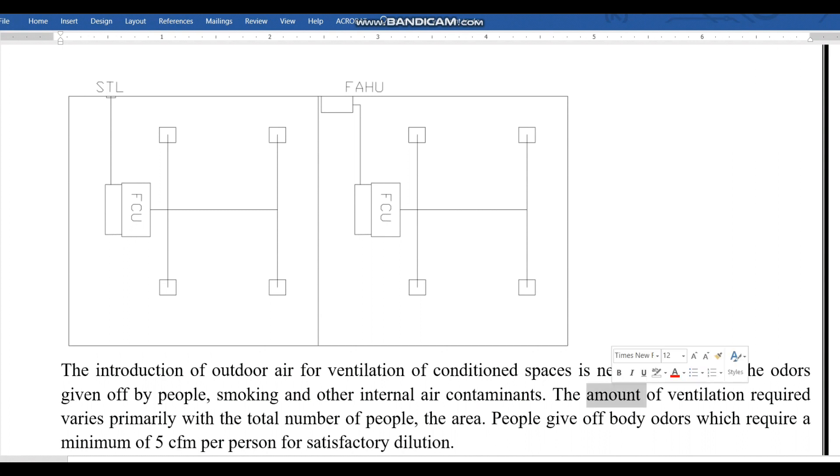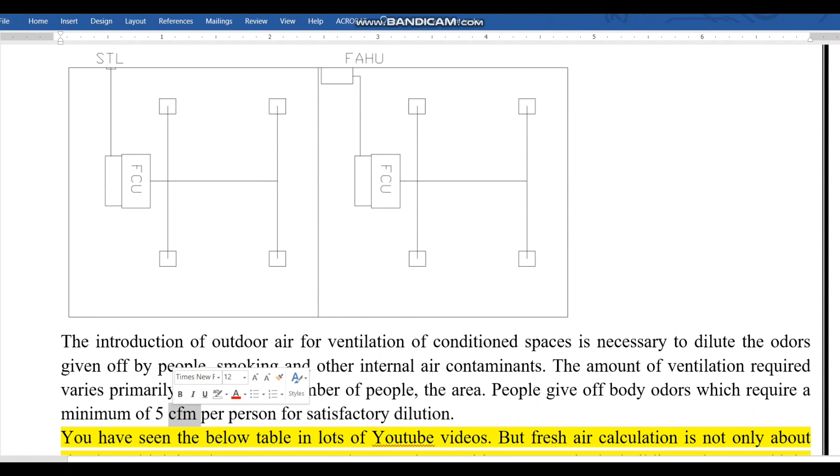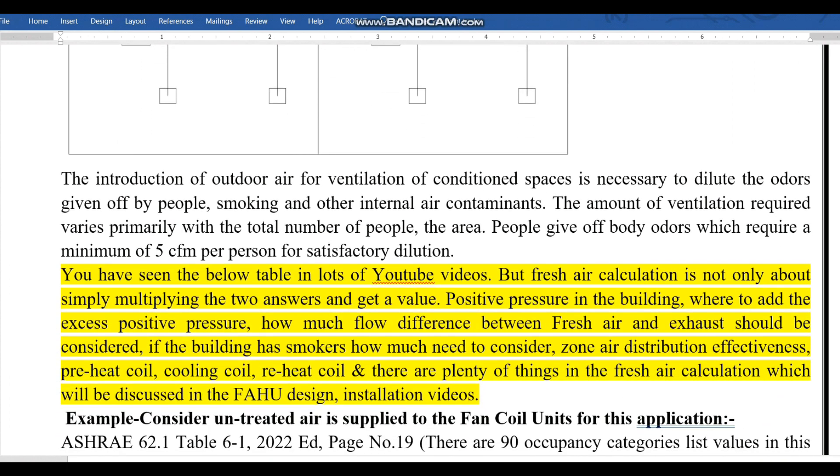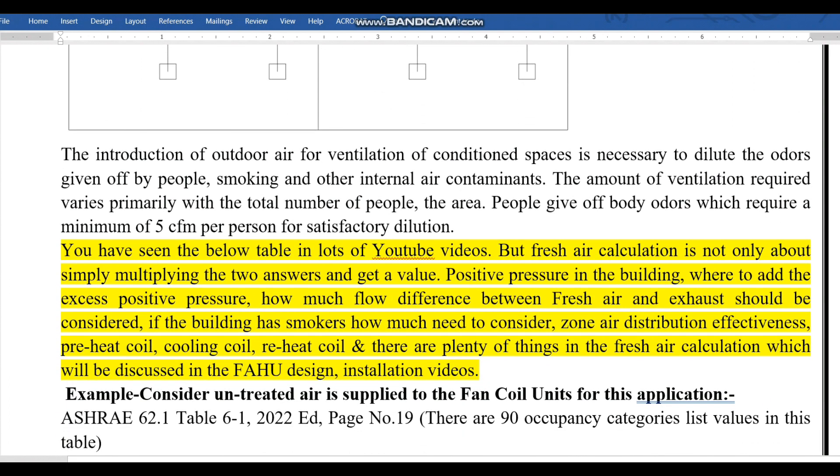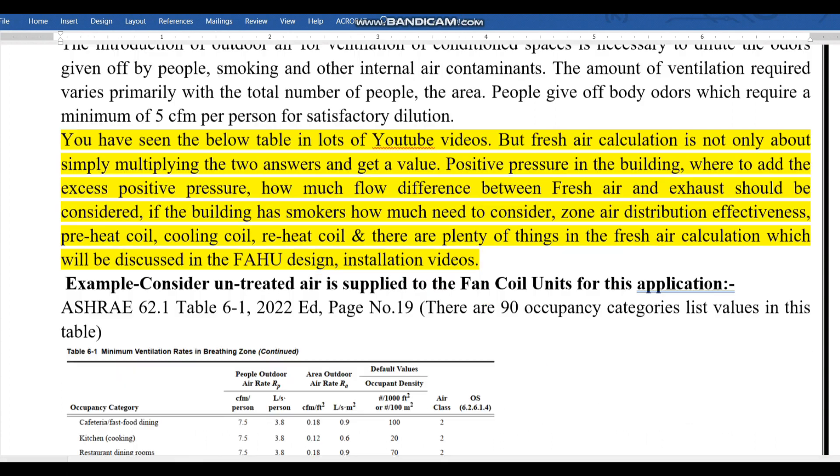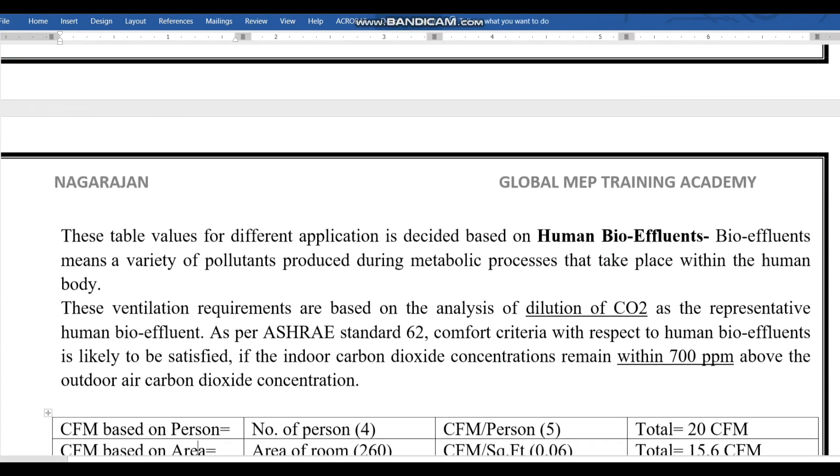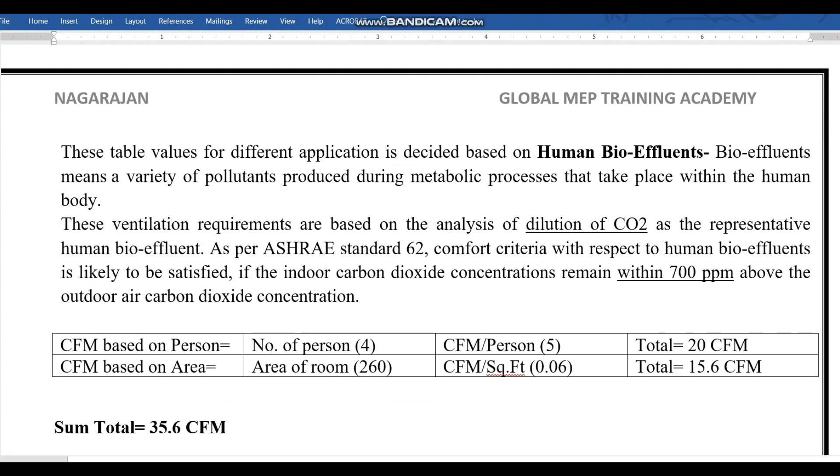The amount of ventilation required varies primarily with the total number of people and the area. People give off body odors which require a minimum of 5 CFM per person for satisfactory dilution. You have seen the table in lots of YouTube videos, but fresh air calculation is not only about simply multiplying.